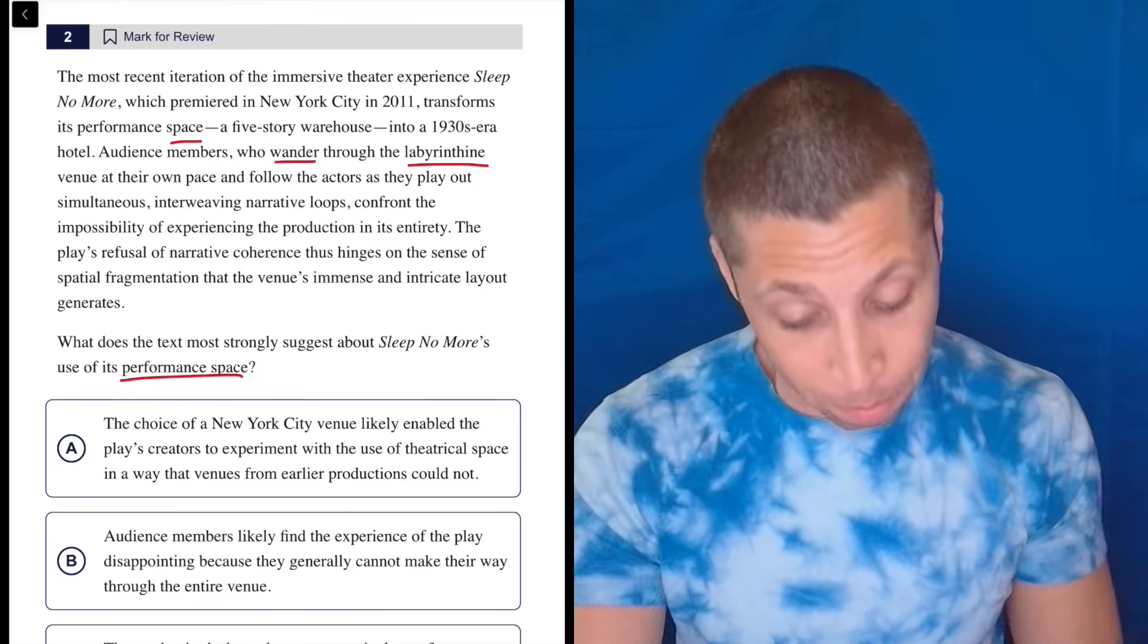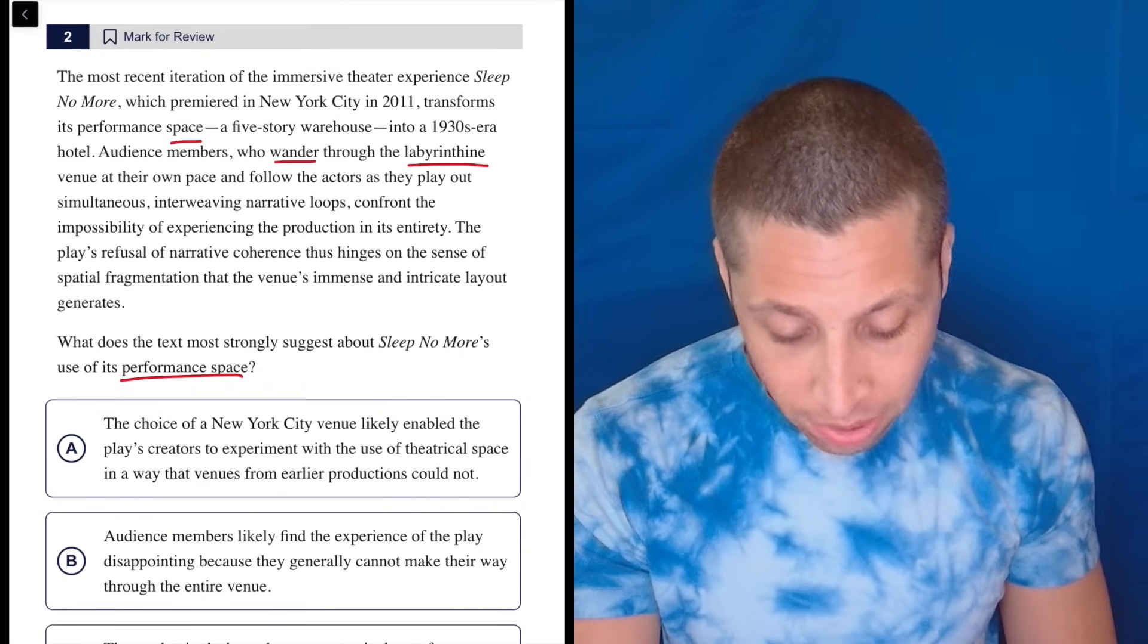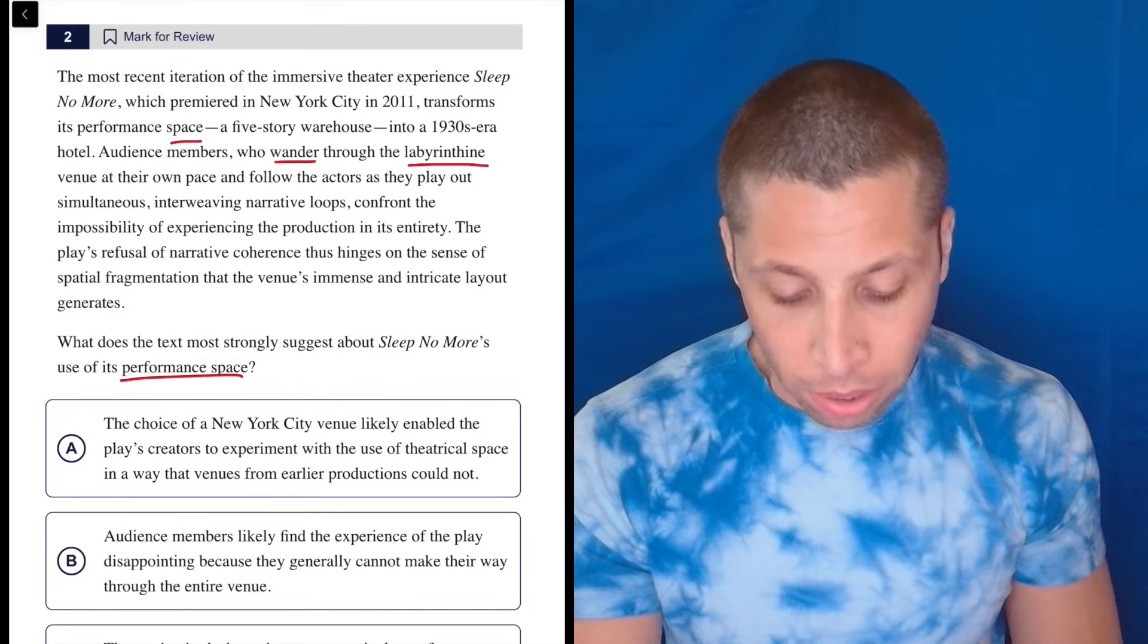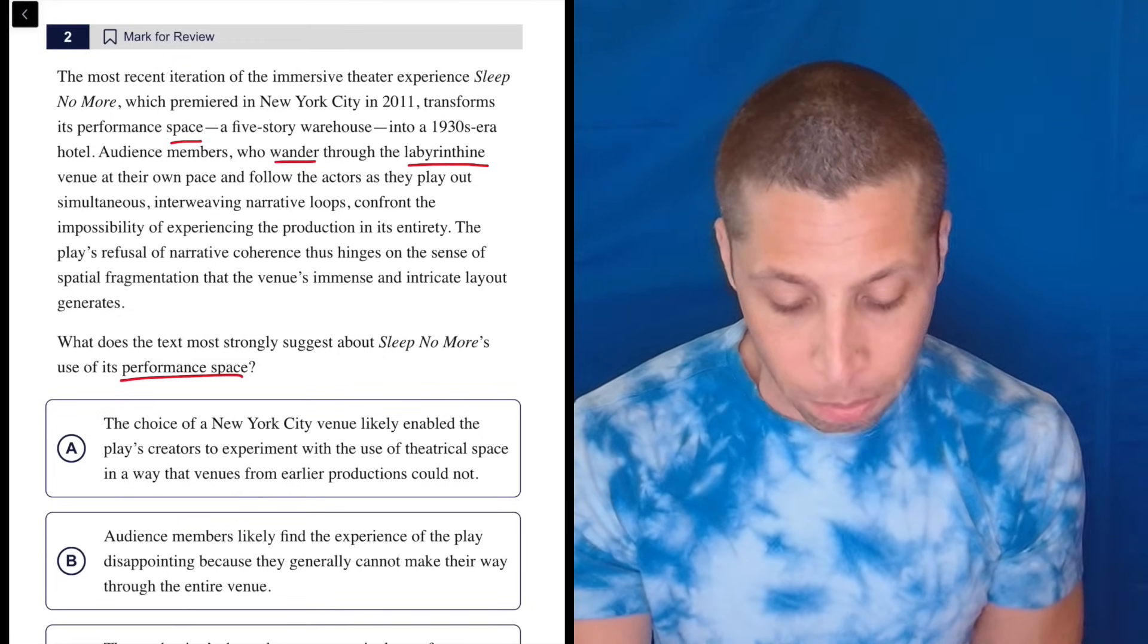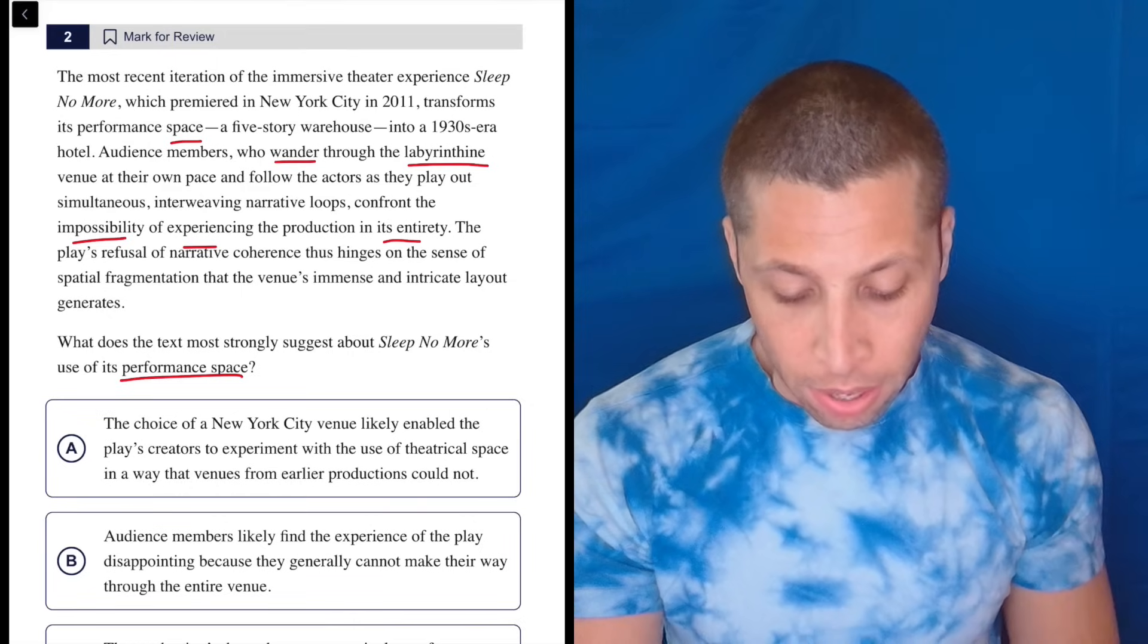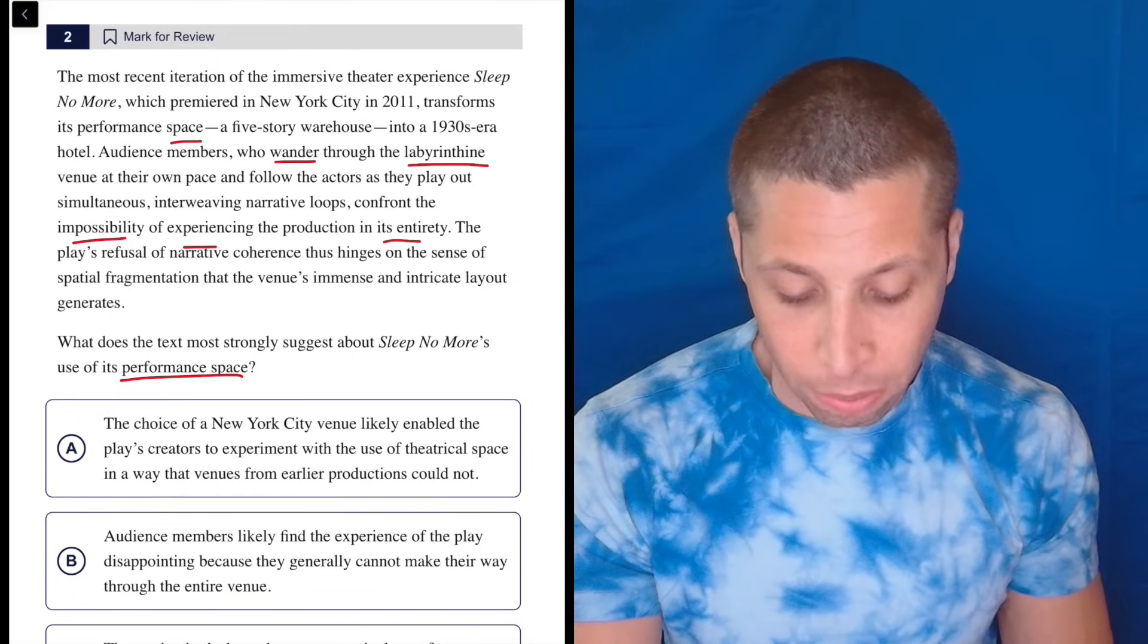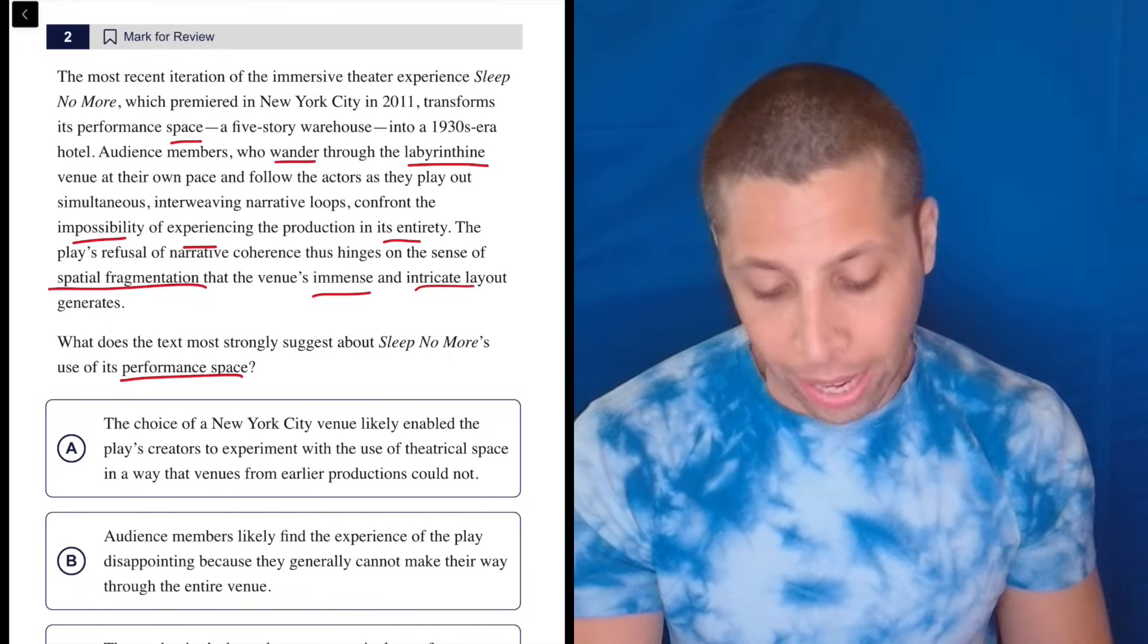So that's what it is, it's big. They wander through it at their own pace and follow the actors as they play out simultaneous interweaving narrative loops, confront the impossibility of experiencing the production in its entirety. So it's impossible to experience everything. The play's refusal of narrative coherence thus hinges on the sense of spatial fragmentation that the venue's immense and intricate layout generates.